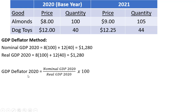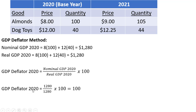The GDP deflator is defined as nominal GDP over real GDP, all multiplied by 100. So the GDP deflator in 2020 — nominal divided by real, multiplied by 100 — equals 100. You should know that the GDP deflator will always equal 100 in the base year.